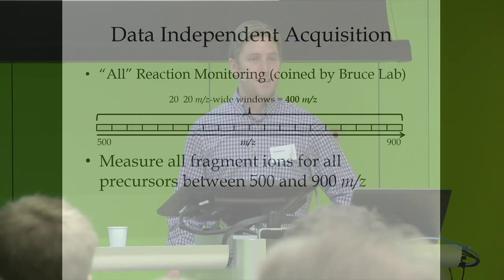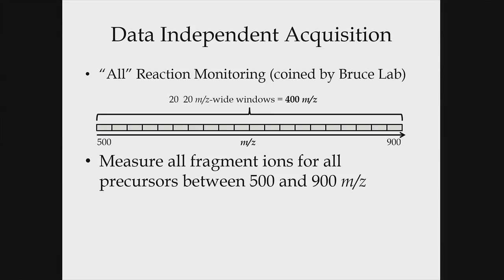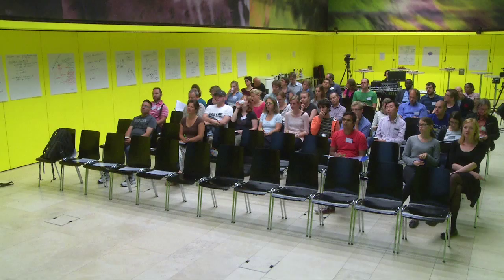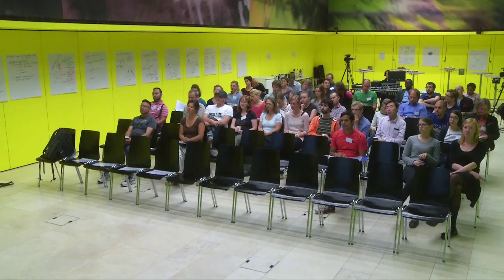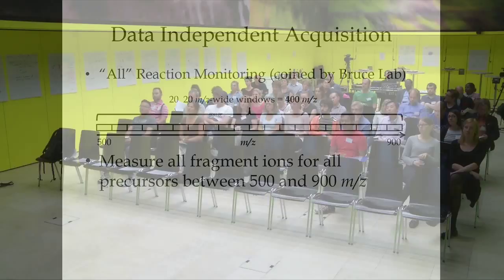The basic way we do DIA in our lab is we measure 20 mass-to-charge wide windows. The basic idea is you have a scan cycle of repeated wide isolation window MS/MS scans that together comprehensively cover a wide mass-to-charge range. This indicates we're acquiring comprehensive data on all precursors between 500 and 900 m/z, and we can later extract fragment ion traces for anything in that range.